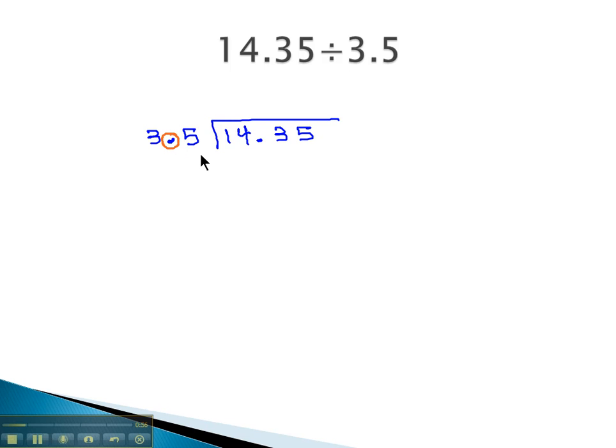There's a decimal in there. We can't have a decimal in the divisor. So what we're going to do is move that decimal out of the way, in this case moving it one decimal place over to the right. To stay balanced, we're going to make that same move inside with the dividend, moving it over one to the right as well.